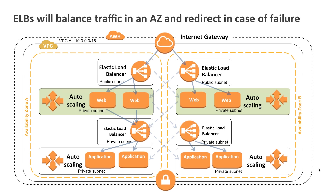As auto scaling events happen — for example, when you suddenly need more web capacity — as you scale out, your instances will automatically be added to the elastic load balancer, and as you scale down, they'll automatically be removed. When you suffer a failure, say the application running in availability zone A fails, elastic load balancing will immediately start directing traffic to the good subnets in availability zone B. Auto scaling then scales back out and gives you the capacity you enjoyed when you had access to both availability zones. So we're building and deploying applications that can take multiple levels of failure without customers being impacted and without losing capacity.